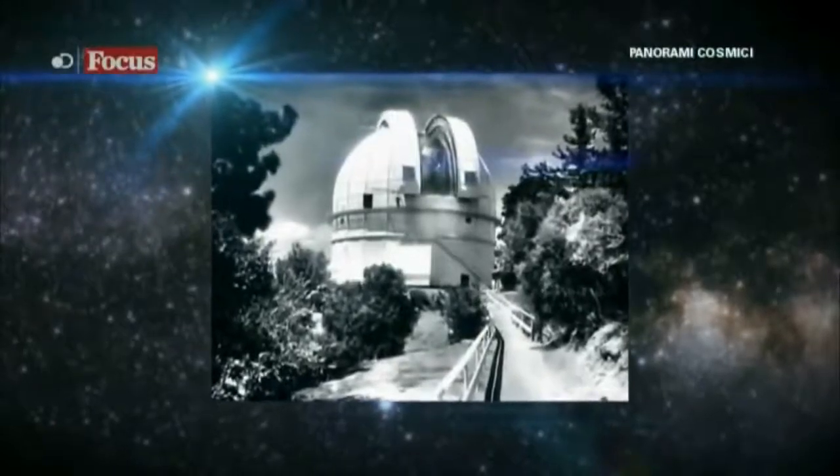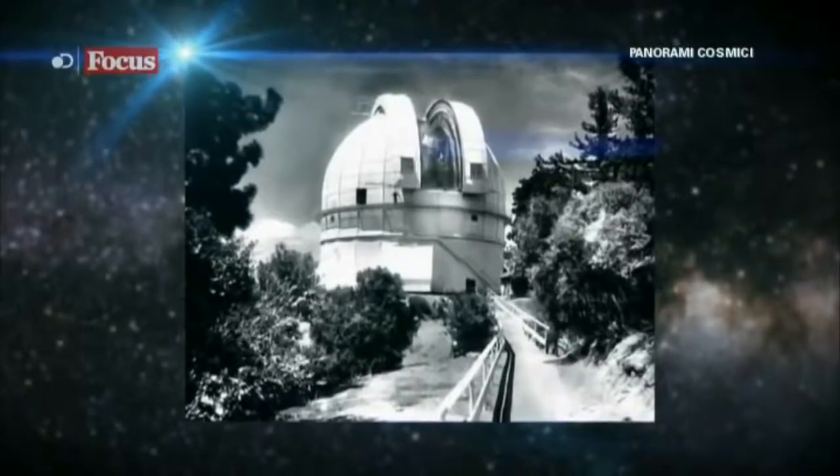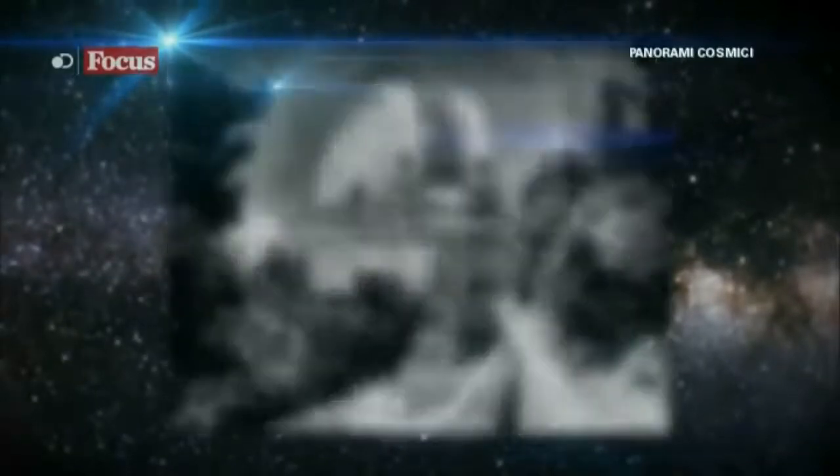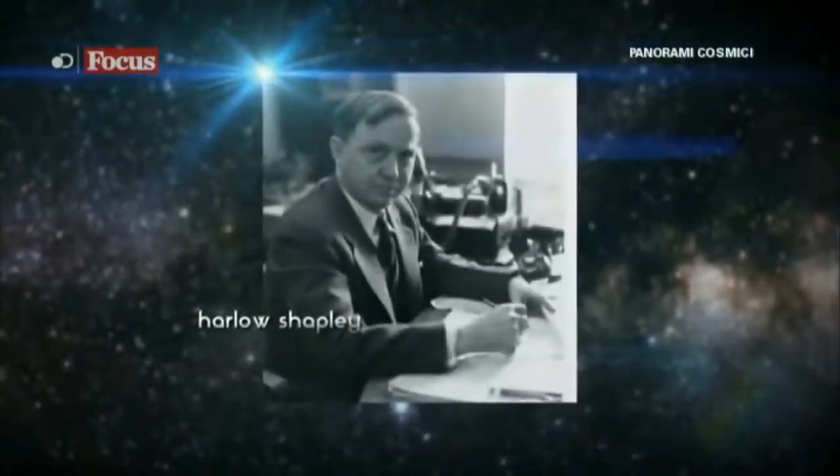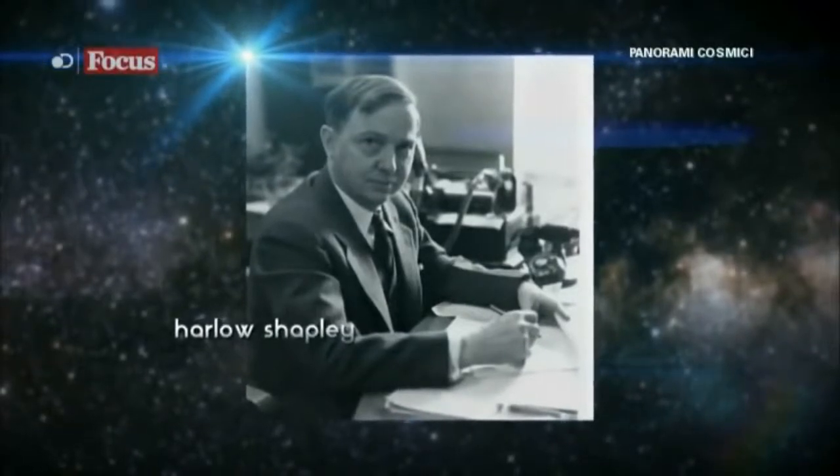Questo metodo venne subito messo alla prova con l'aiuto del telescopio più potente disponibile all'epoca, il riflettore da un metro e mezzo posizionato su Mount Wilson vicino a Los Angeles.